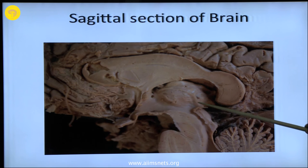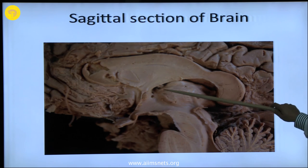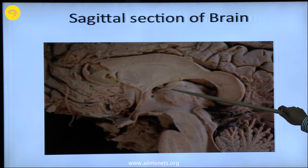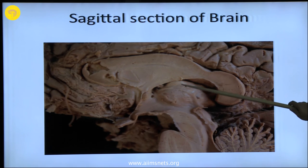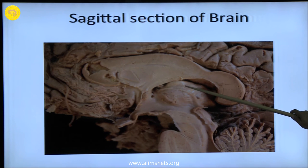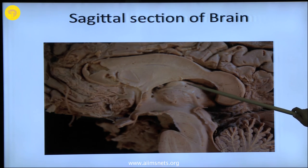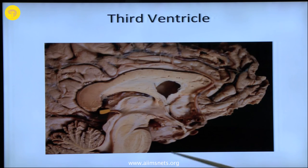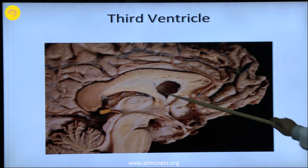Here you can see the stria medullaris thalami. This is the lateral border of the third ventricle, and the other part of the thalamus goes to the body of the lateral ventricle — the other part of the thalamus here is forming the body of the lateral ventricle. We will see the different portions of the third ventricle here.